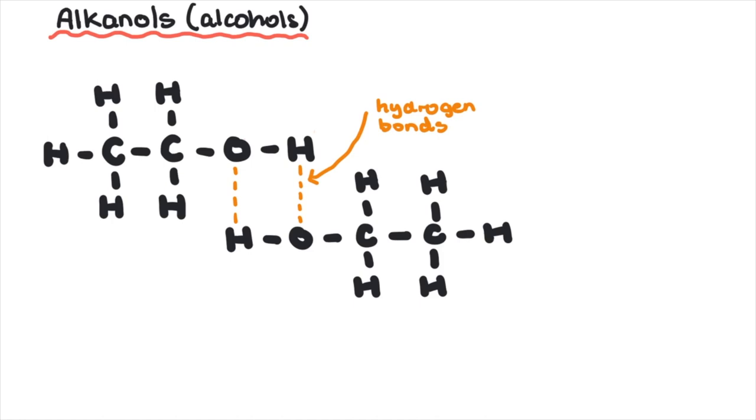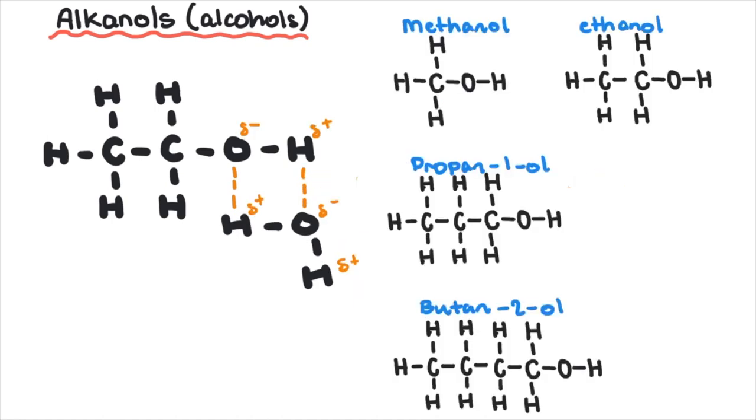Hydrogen bonding also explains the high water solubility of the first four members of the alkanol homologous series, but as the chain increases, they become increasingly insoluble.